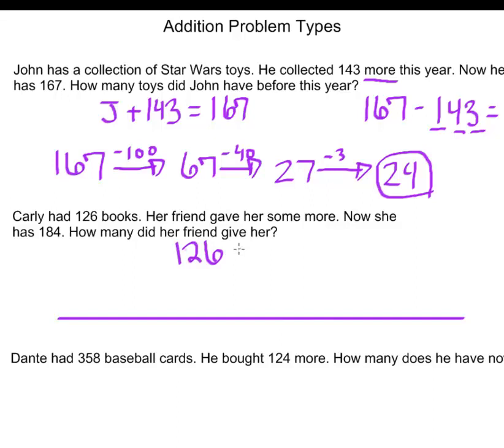We don't know how many her friend gave her, so that is the information we are going to be finding. I am going to use the variable C for the number we don't know yet. Now she has 184. How many did her friend give her?